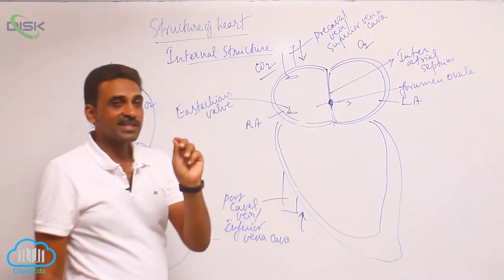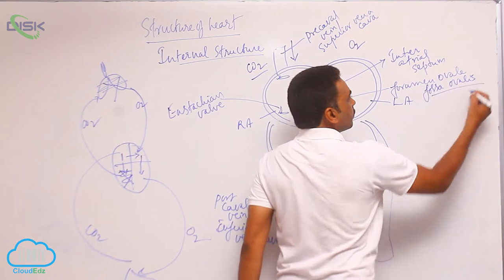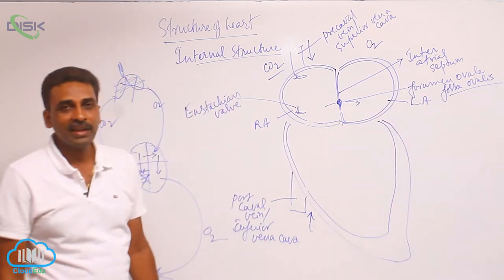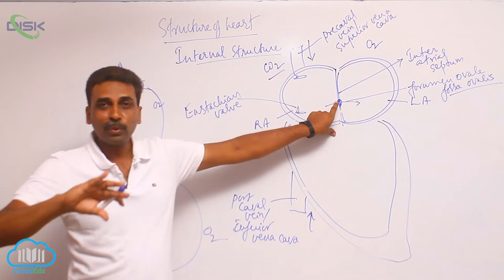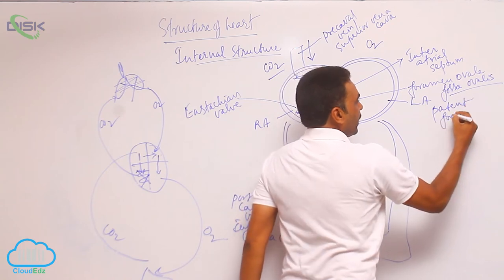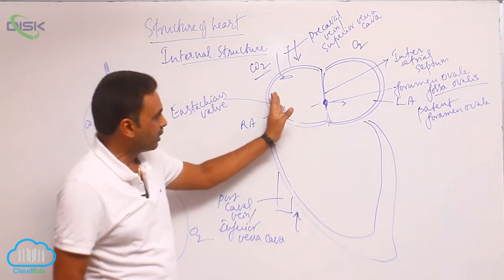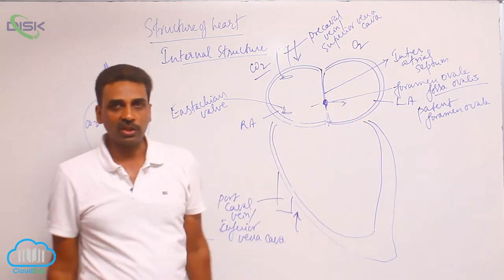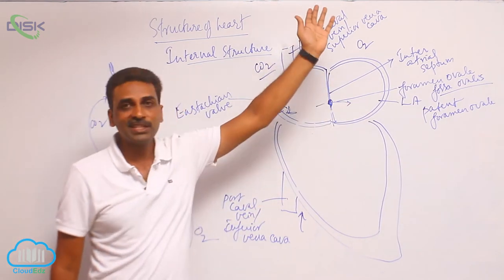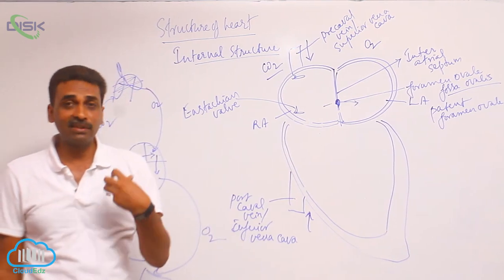The foramen ovale is now represented as a small depression called the fossa ovalis. In some people the foramen ovale is not completely fused — this is called patent foramen ovale. That is a diseased condition where blood from the right side and left side mixes, resulting in blue babies where the blood has less oxygen and more carbon dioxide.